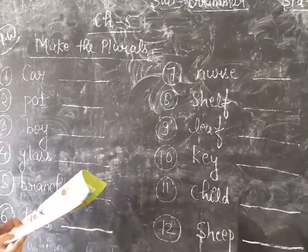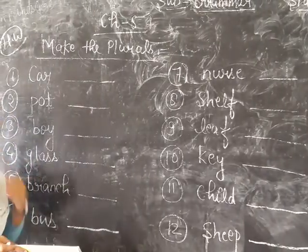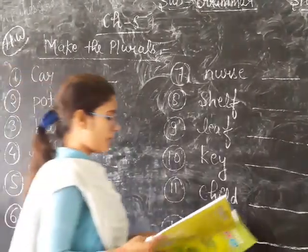Some words like sheep are both singular and plural, just like fish.